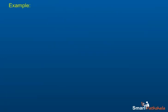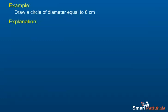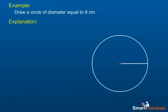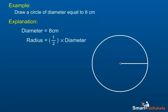Example: Draw a circle of diameter equal to 8 cm. Explanation: We first find the radius of the circle. We know that the radius is half of the diameter of the circle. So the radius is equal to half of 8 cm, which is equal to 4 cm.